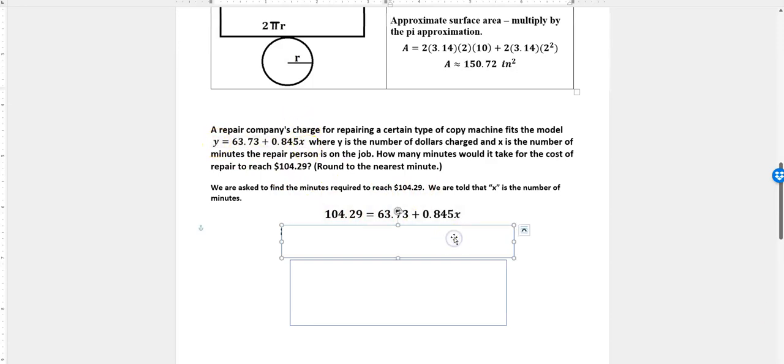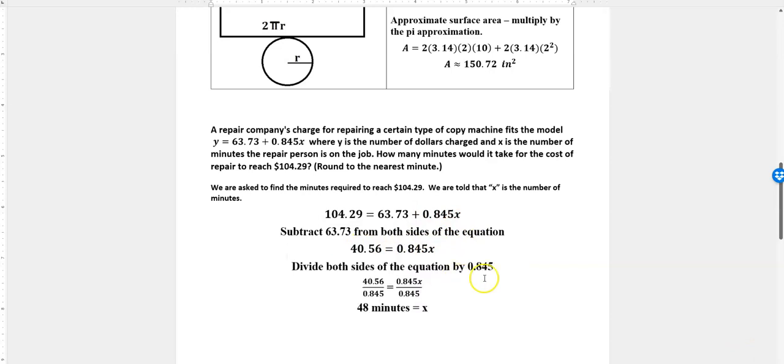What I want to do first is subtract 63.73 from both sides. That gives me 40.56, and then I have this by itself. I want to get rid of this by dividing both sides of the equation by 0.845.